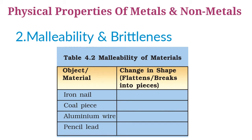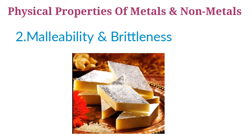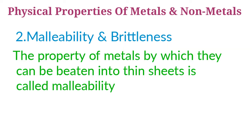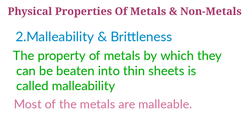You find that iron gets flattened due to hammering and turns into a thin sheet without breaking. Similarly, the piece of aluminium metal turns into a thin aluminium sheet without breaking. However, the coal piece and pencil lead break into small pieces and form powder when beaten with a hammer. The property of metals by which they can be beaten into thin sheets is called malleability. Most of the metals are malleable.